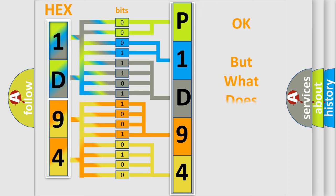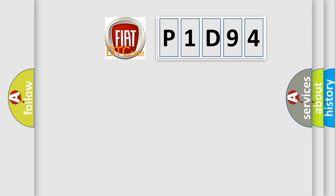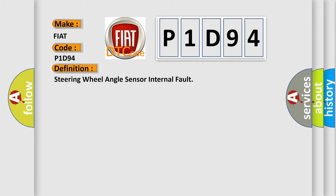We now know in what way the diagnostic tool translates the received information into a more comprehensible format. The number itself does not make sense to us if we cannot assign information about what it actually expresses. So, what does the diagnostic trouble code P1D94 stand for? Interpreted specifically for FIAT car manufacturers.